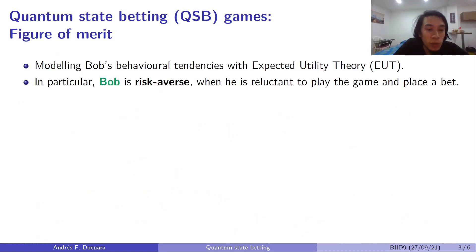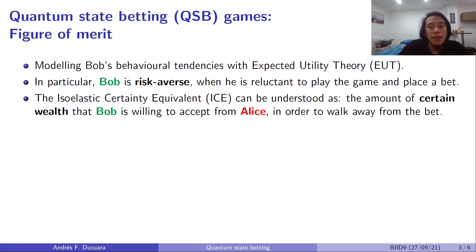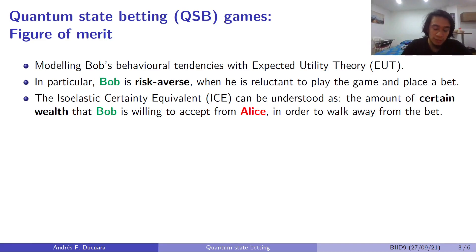So now, we want to model Bob's behavioral tendencies using expected utility theory, which is a theory from the economic sciences. In particular, we say that Bob is risk-averse when he is reluctant to play this game and place a bet in it. In this regard, there is a quantity which is known as the ICE, the elastic certainty equivalent, or ICE, which can be understood as the amount of certain wealth that Bob is willing to accept from Alice, such that he's happy to walk away with that and not place any bet.